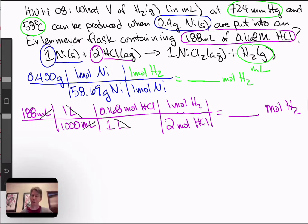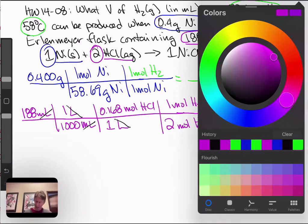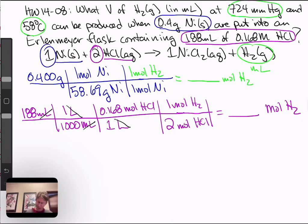Just like all limiting reactant problems, then you choose the smaller moles. And whichever one's smaller, you're going to do a PV equals NRT. You have pressure. You're going to have to convert it to atmospheres, but you can do that. You're going to have temperature in degrees Celsius. You're going to have to convert that to Kelvin. R is a constant. And N is going to be whichever moles is the smaller one of your calculations. That will allow you to solve for V. You'll get V in liters. And you'll have to convert it back to milliliters.